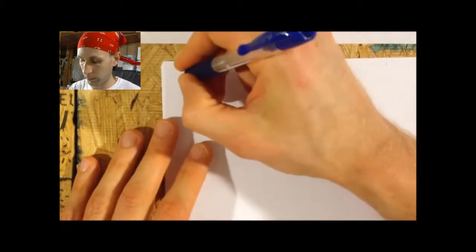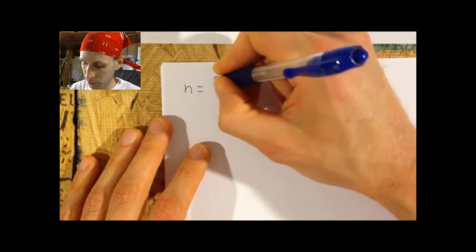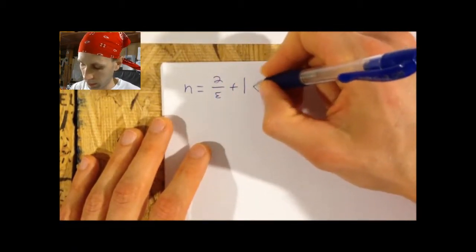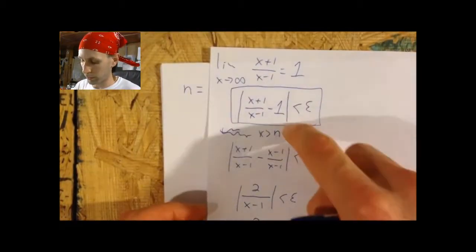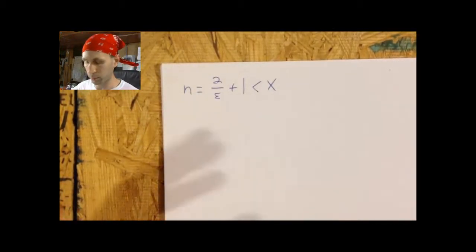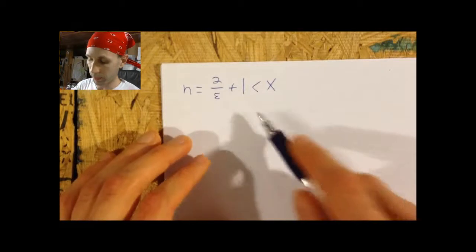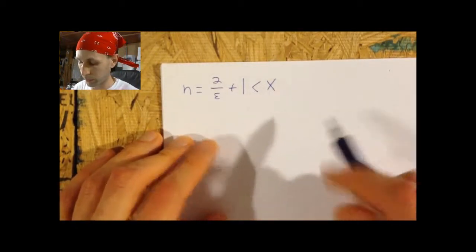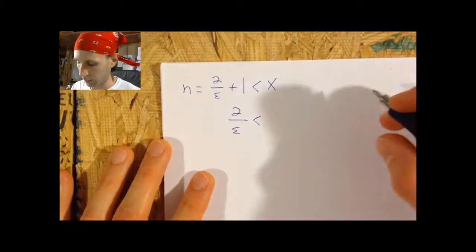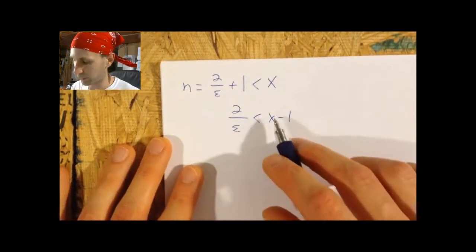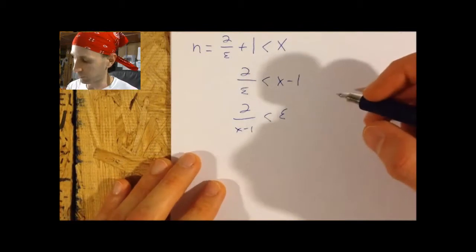Now to actually prove that this is true, we say: let epsilon be given. The claim is that N equals 2 over epsilon plus 1. If we let x be greater than that number, then from this it can be derived that the statement we wanted to show is true. Let's see how that goes — I'll just reverse the steps. If epsilon is 1 trillionth, we let N be 2 over 1 trillionth plus 1. So if x is greater than N, that means 2 over epsilon is less than x minus 1.